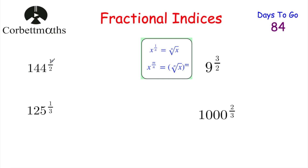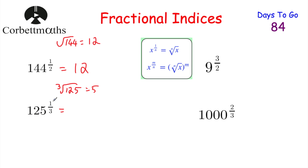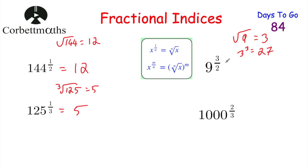For 144 to the power of 1/2: a power of 1/2 means square root. √144 = 12, so the answer is 12. For 125 to the power of 1/3: take the cube root. ∛125 = 5. For 9 to the power of 3/2: denominator is 2, so square root 9 = 3, then raise to the power of 3 (numerator): 3³ = 27. So 9 to the power of 3/2 equals 27.